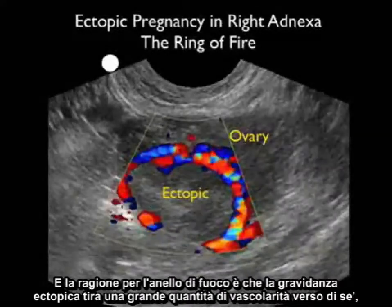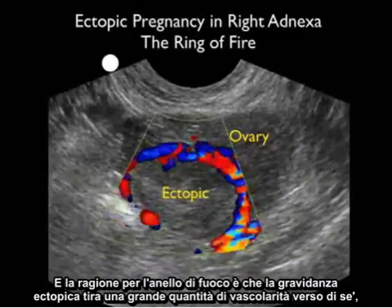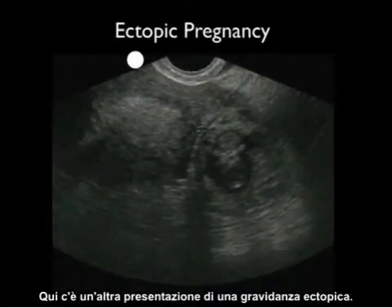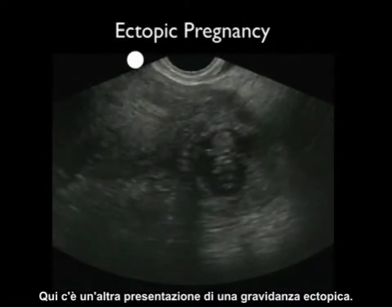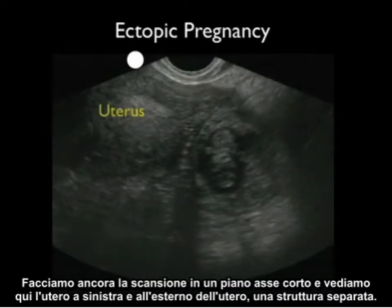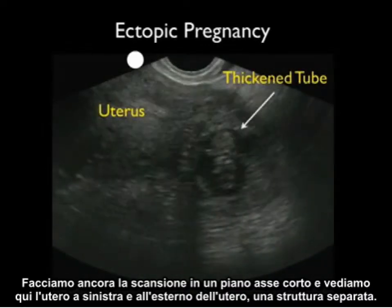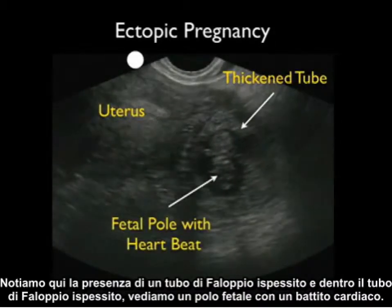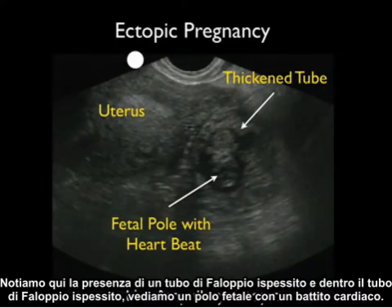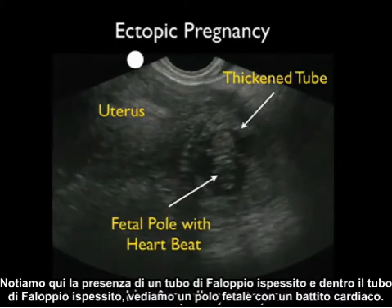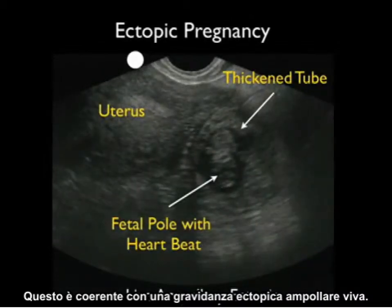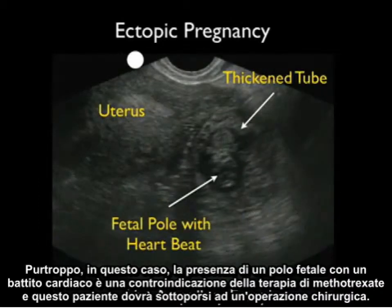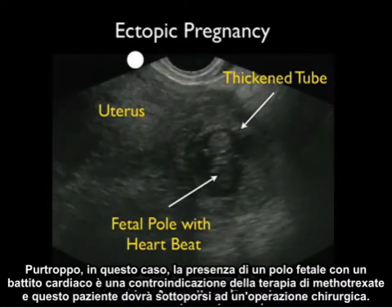The reason for the ring of fire is that the ectopic pregnancy pulls a huge amount of vascularity towards it, and using Doppler we can separate the ectopic from the ovary above it. Here's another presentation: scanning at a short-axis plane, we see the uterus to the left and outside it a separate structure — a thickened fallopian tube containing a fetal pole with a heartbeat, consistent with a live ampullary ectopic pregnancy. The presence of a fetal pole with a heartbeat is a contraindication to methotrexate therapy, and this patient will need to undergo surgery.